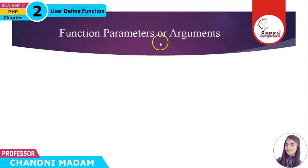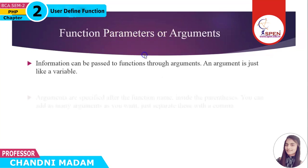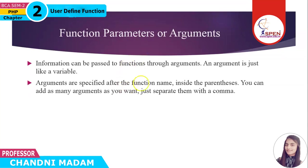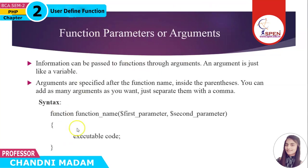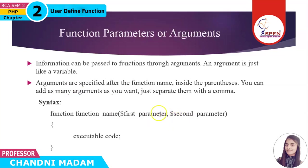Next is function parameters, or you can also say function arguments — both are the same. Whenever we pass some information into a function, we use parameters or arguments. PHP gives you an option to pass information inside a function using parameters or arguments. In the syntax, after the function name you can pass information through a parameter or argument, and you can pass many arguments as comma-separated values.